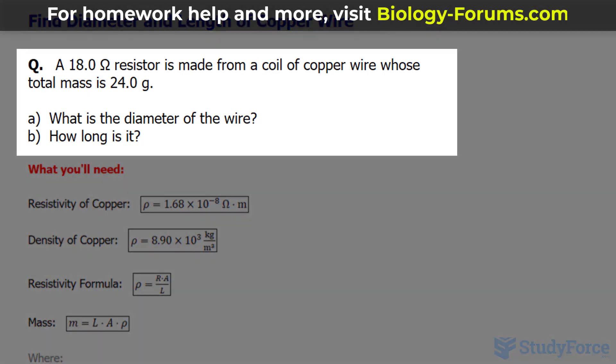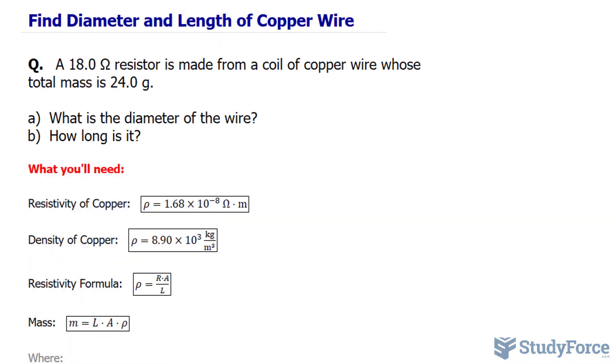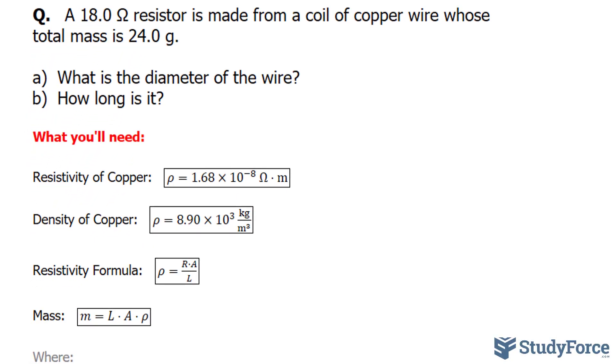The question reads: an 18.0 ohm resistor is made from a coil of copper wire whose total mass is 24 grams. We have to find out what the diameter of the wire is and how long it is. To do this question correctly you need to know a few things.